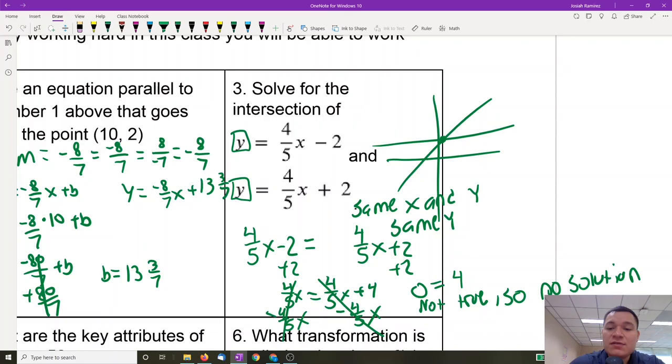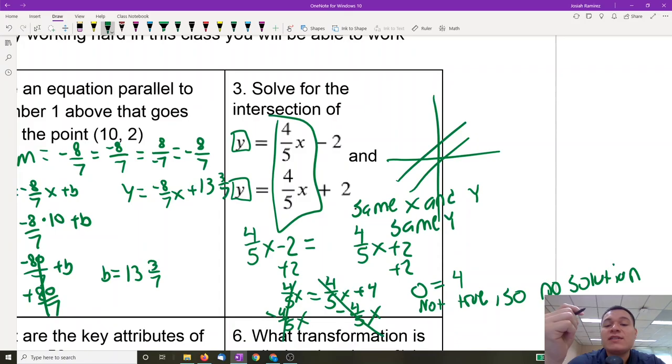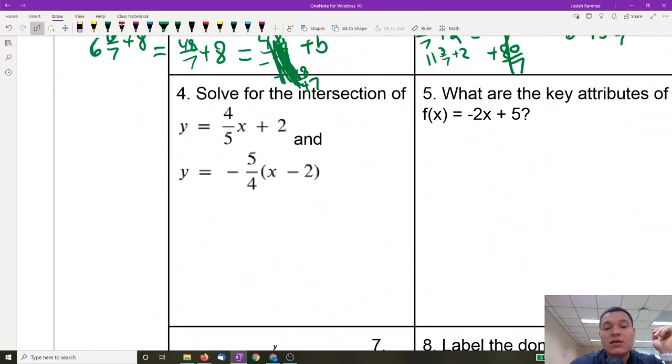And another way that we could see that this is no solution is, if you look at these two equations that we started with, (4/5)x - 2 and (4/5)x + 2, they're actually the same exact equation, it's just that the y-intercept changed. Since the slopes are the same, those are two parallel lines. And if they're parallel, that means that they're not intersecting. So this was actually something to make you just realize that parallel lines don't intersect, and there is no solution between them.